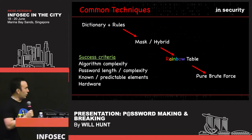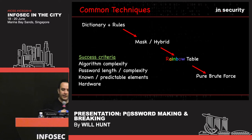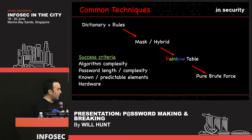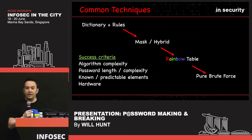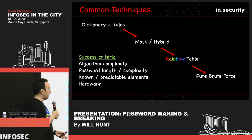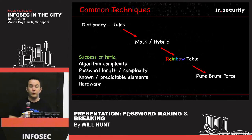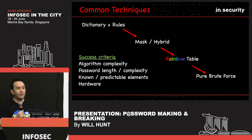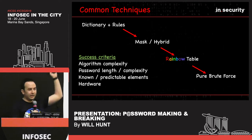Regardless of the technique you employ, success is going to be based on a number of things. The algorithm complexity — for example, attacking a Windows NTLM hash is going to be substantially faster and easier than attacking a computationally strong hash like Bcrypt or Scrypt. The length and complexity of the password, of course — these two contribute to the overall key space, exhausting the possible combinations. Whether you have any known or predictable elements is very important: if you know the password can only use lowercase letters or numbers, you can reduce your key space. And of course, the hardware — nowadays it's all about GPUs, and stacking up the latest NVIDIA gaming graphics cards lets you crack hashes very quickly.